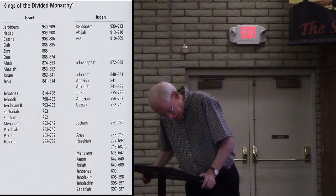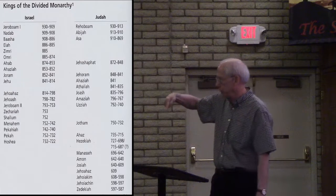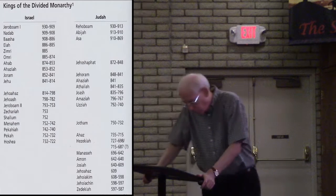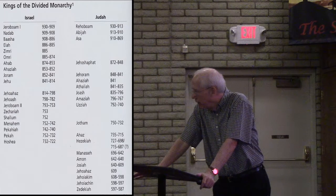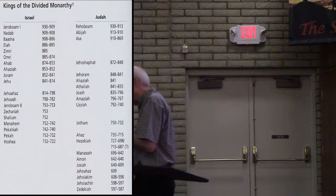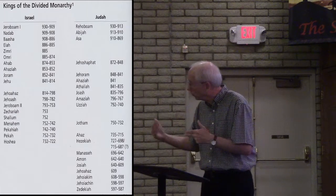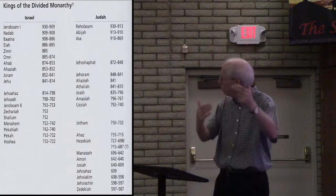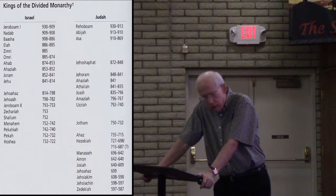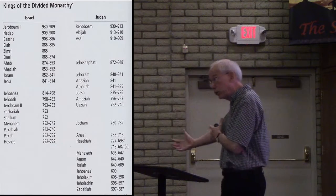Jehu's great-grandson Jeroboam the Second followed Jehoash to the throne of Israel. He walked in the steps of Jeroboam the son of Nebat — a bad king doing idol worship and the golden calves — as was true of all the kings of Israel. But God in His mercy still used Jeroboam the Second to restore Israel's boundaries and to really strengthen Israel militarily.